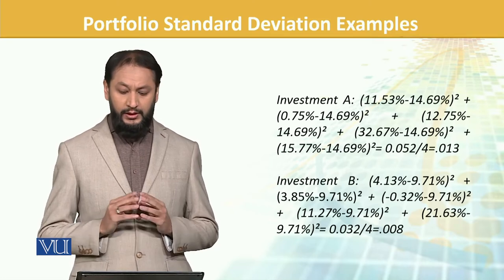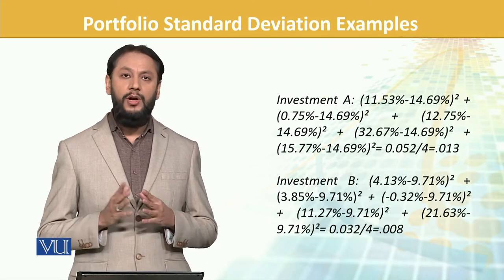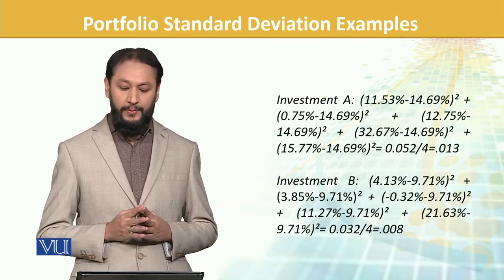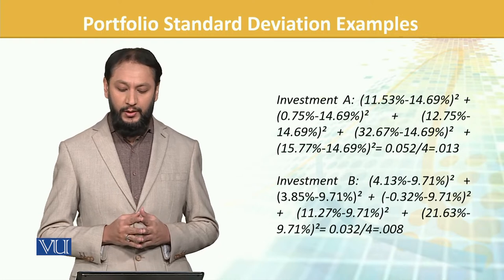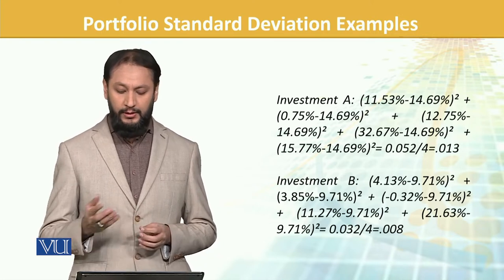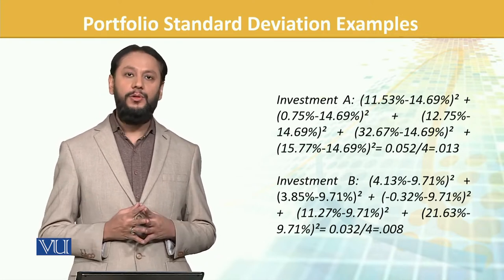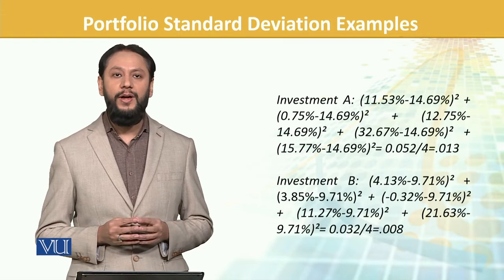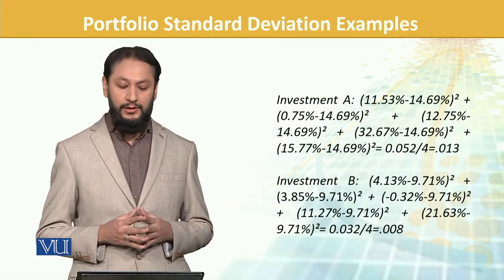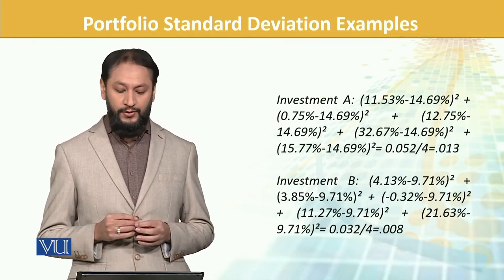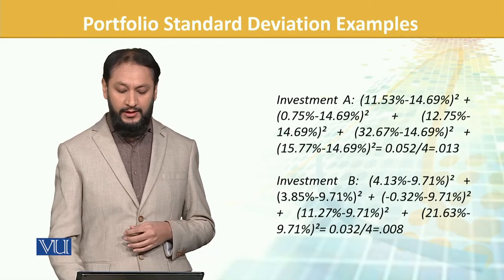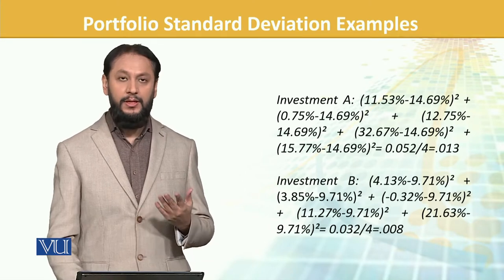From the mean you have calculated, you calculate the deviations, and ultimately you are able to reach a point to calculate the variance of Investment A as well as Investment B.